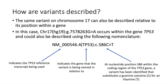The same variant shown in the last slide can also be described based on its position within or around a specific gene. In the example used on the last slide, the variant on chromosome 17 occurs within the coding region of a gene called TP53. This example shows how the same variant can be described based on its position within the TP53 gene. NM-000546.4 indicates the TP53 transcript being used as a reference in this case. Please refer to our Introduction to Genome Assemblies and Transcript video for more information about transcripts. Variant naming can vary depending on the transcript being used, so it is important to specify a transcript for any variant.